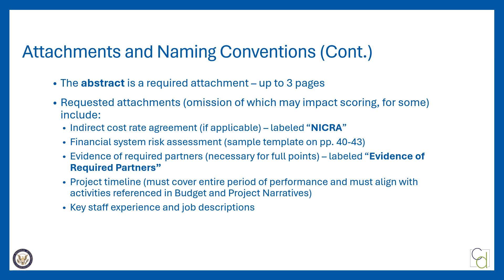For the project timeline, include a brief summary of planned grant activities and associated milestones. The timeline must cover the entire period of performance, which may not exceed 36 months, and must align with activities referenced in the budget narrative and project narrative — this attachment impacts scoring. Key staff experience and job descriptions for all current or planned key personnel who may staff the project must also be included, and these positions must be included in the budget narrative as well — this attachment also impacts scoring.